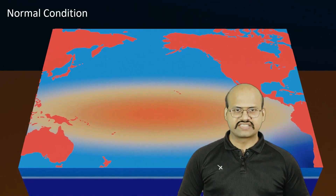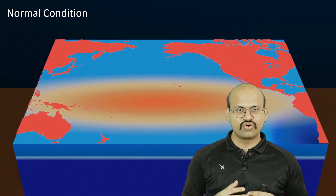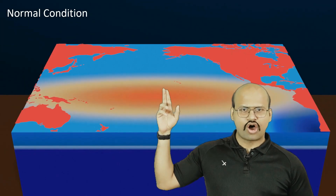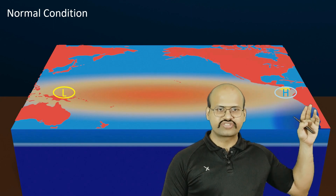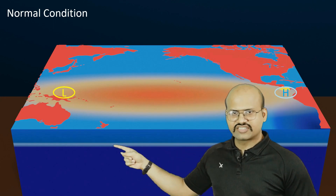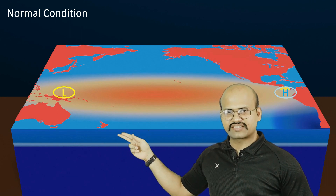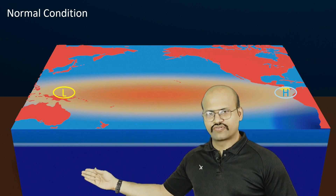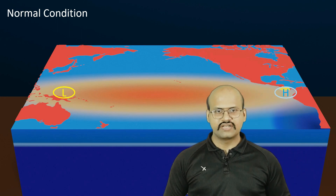Now looking at the southern Pacific Ocean, under normal circumstances — when there are no wind currents — there is hot water in the central regions of the Pacific Ocean. Cold water is confined to the coastal margins of South America. There is also a thermocline, which is the region where temperature changes drastically from warmer surface waters to cooler deeper waters, and it is almost horizontal under normal conditions.